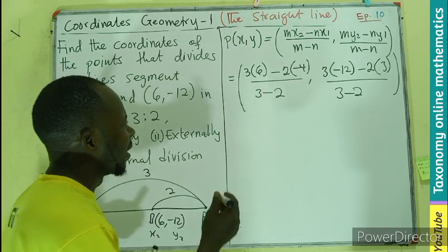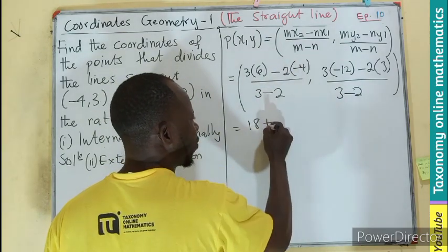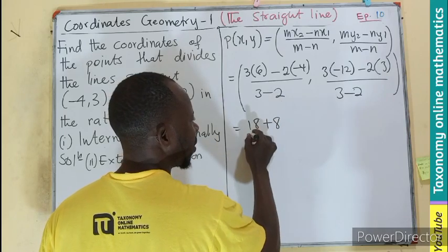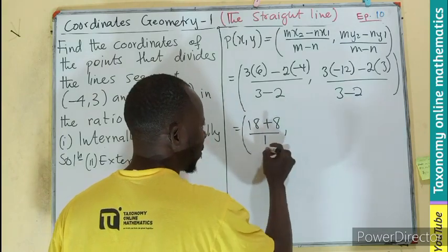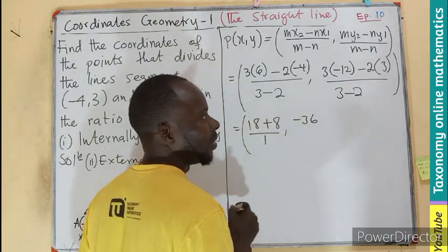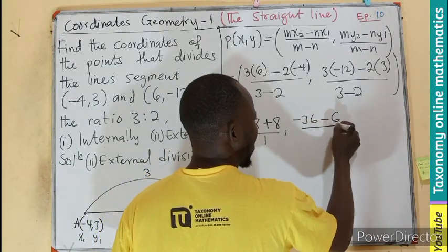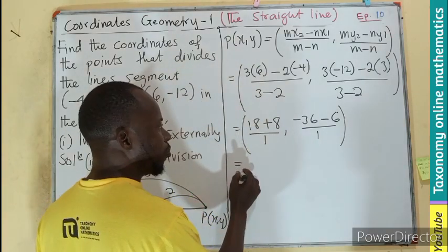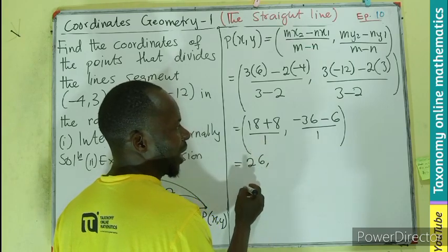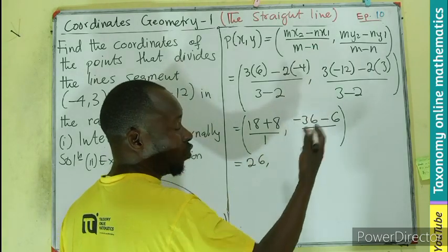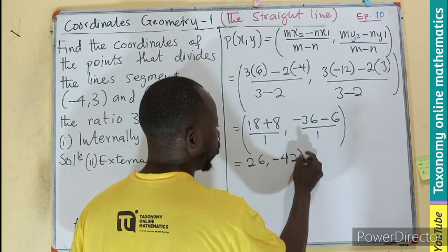Now let's multiply. I will be having 18 minus negative 8, so I have positive 8, divided by 1 in the case of this. Then comma, -36, in the case of that multiplication, minus 6, divided by 1. So if I compute that, 22 here. So 26 divided by 1 will still be the same. This is just like adding two negative numbers together. That would be -42.